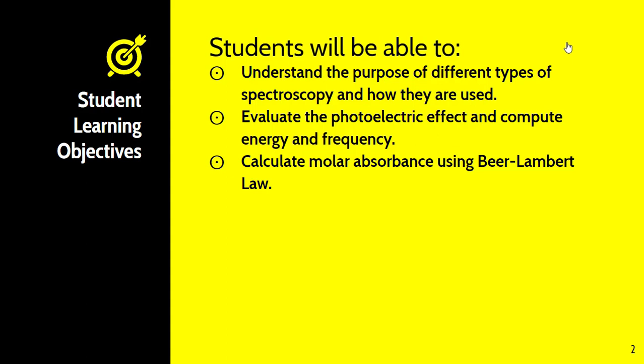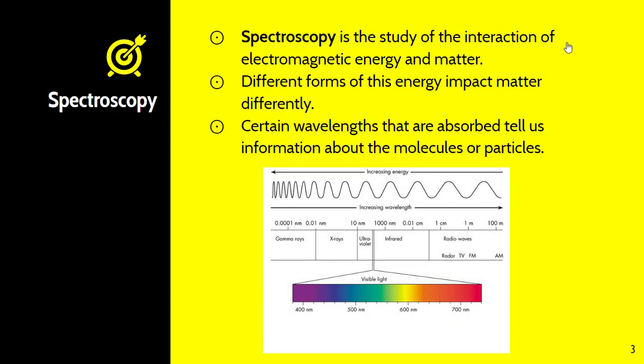Spectroscopy is very interesting because it is the study of the interaction of electromagnetic energy and matter. Different forms of this energy impact matter differently, and then we can use a sensor to determine if radiation is absorbed or reflected. This would be consistent across the same molecule using the same type of spectroscopy. If we know the absorbance and reflection pattern of a particular molecule, we can test an unknown and compare it to the known to see if it matches.